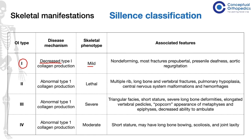Type 1 is associated with non-deforming fractures, mostly seen in pre-pubertal children. It is also associated with pre-senile deafness and aortic regurgitation.